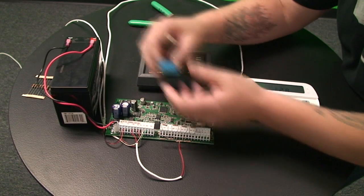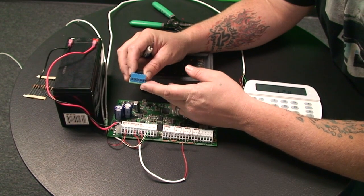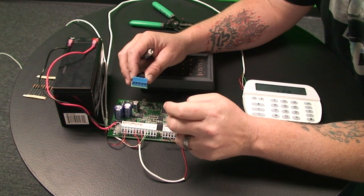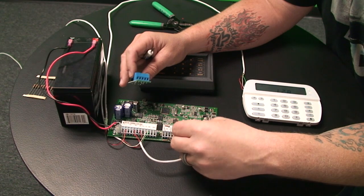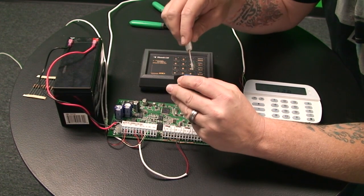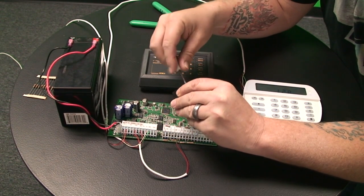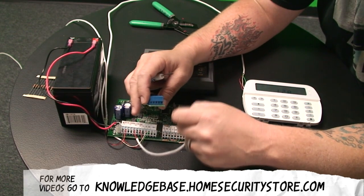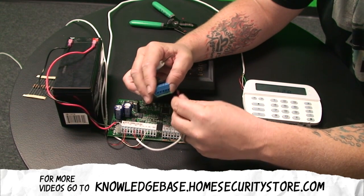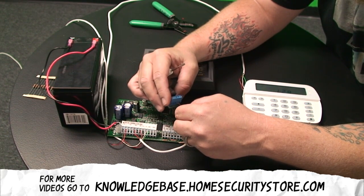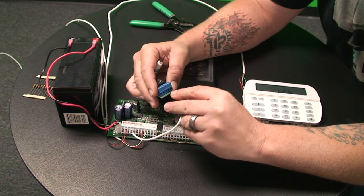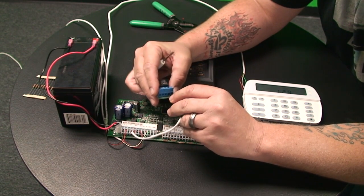Now on the relay, the relay has a positive and a negative. So we're going to go ahead and use the red as positive and then the black as negative. So I'll make sure our screw terminals are loose here and we'll do positive into positive and negative into negative.